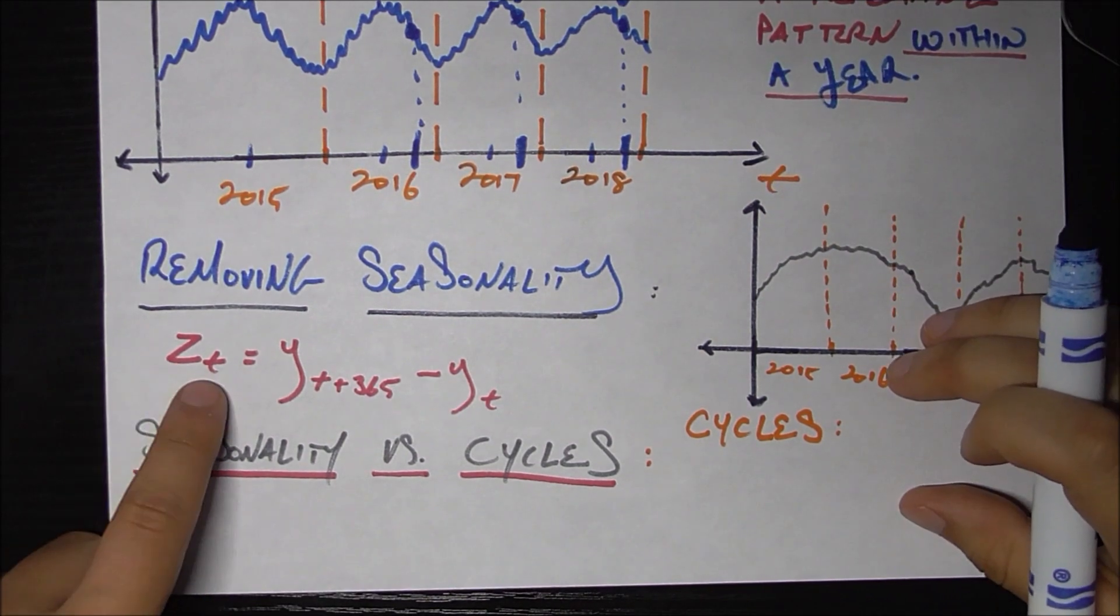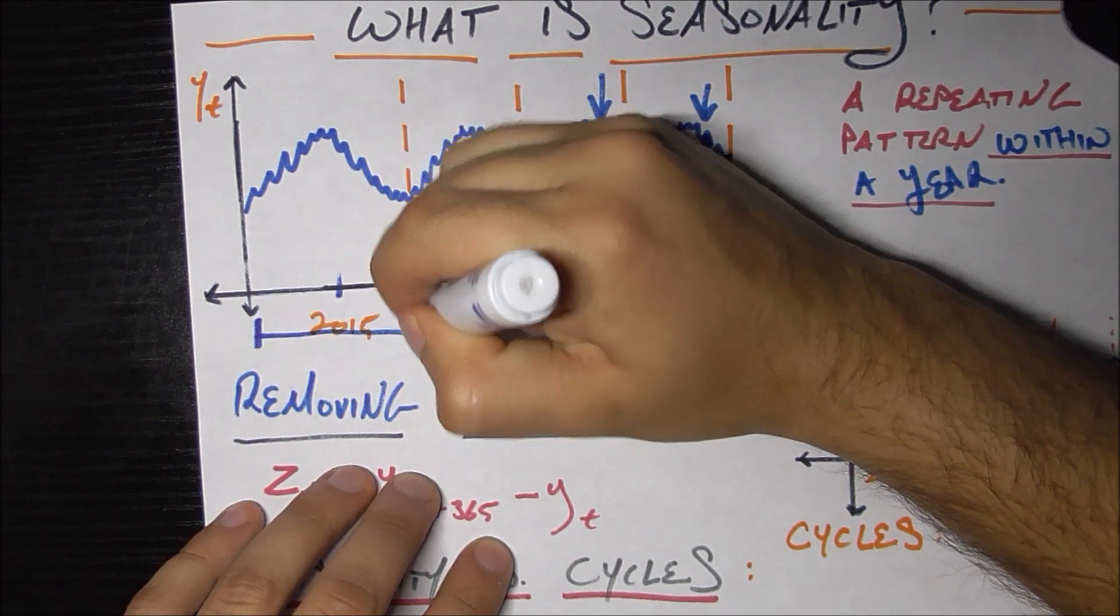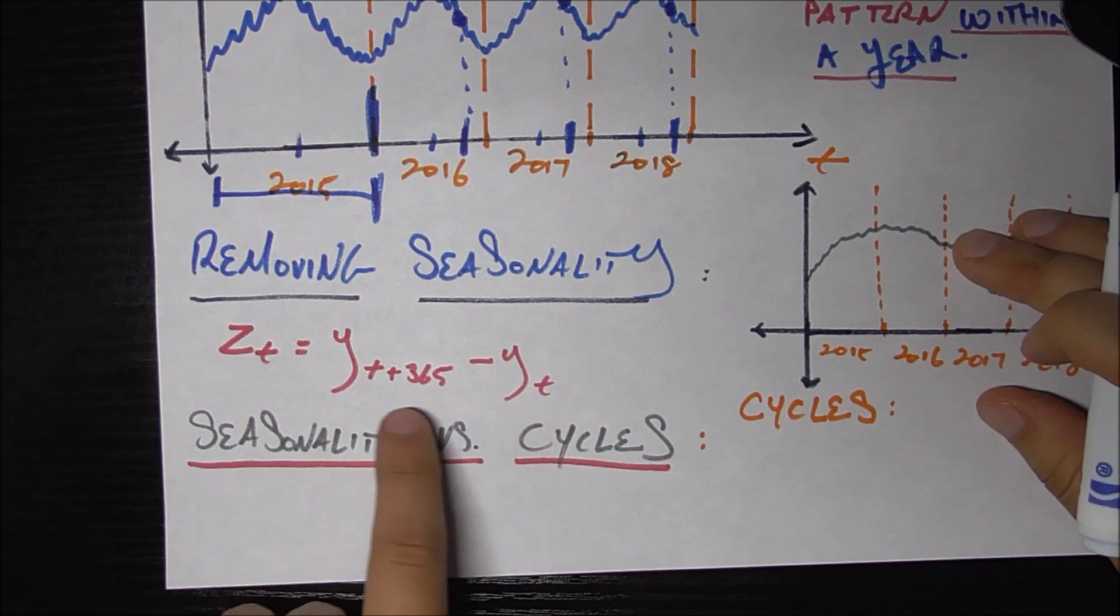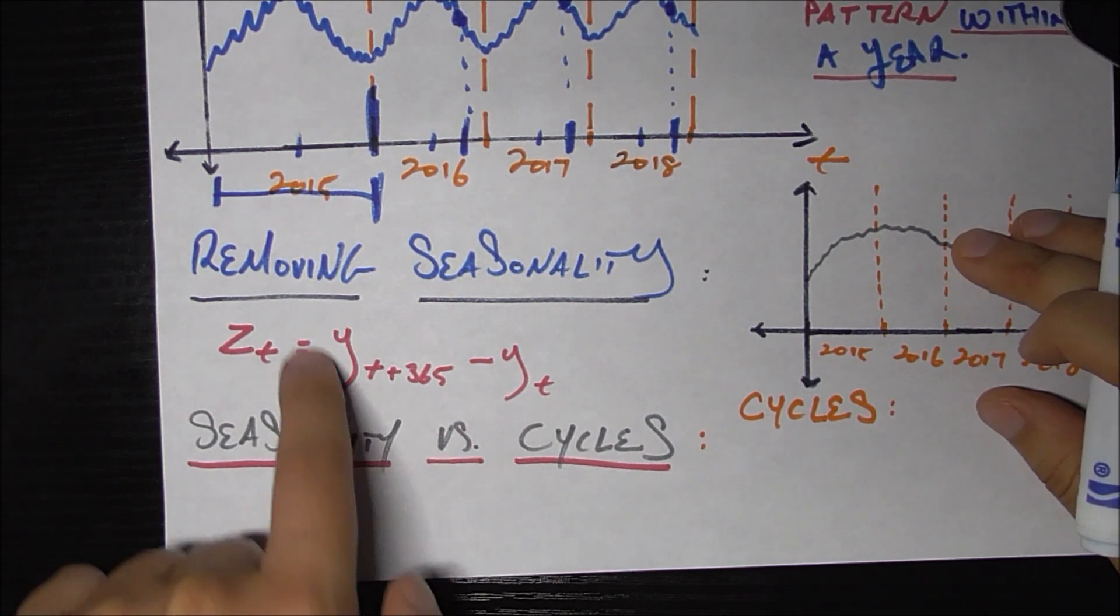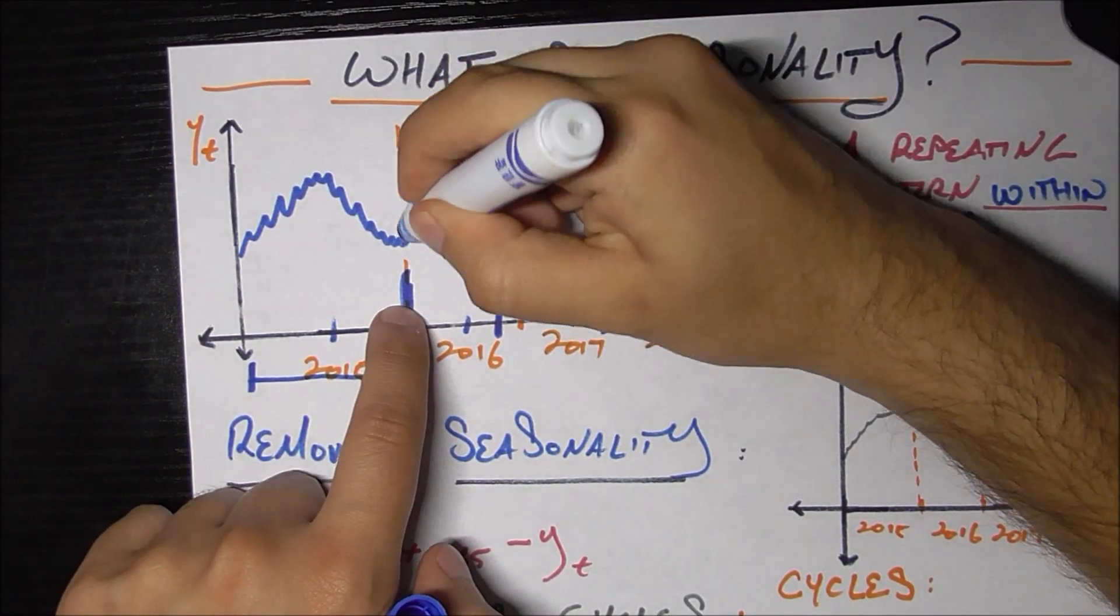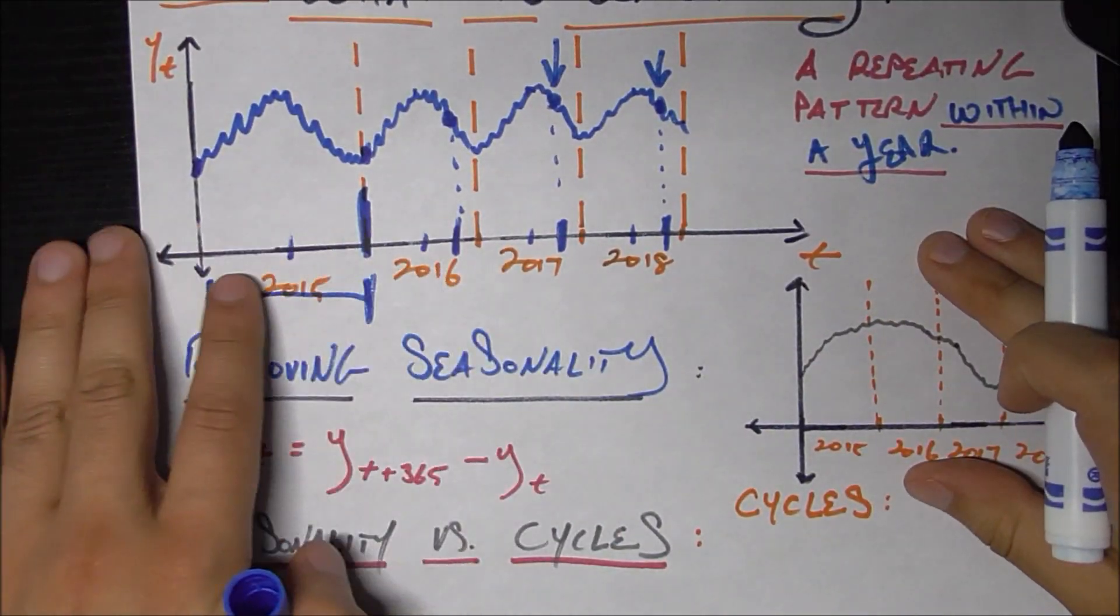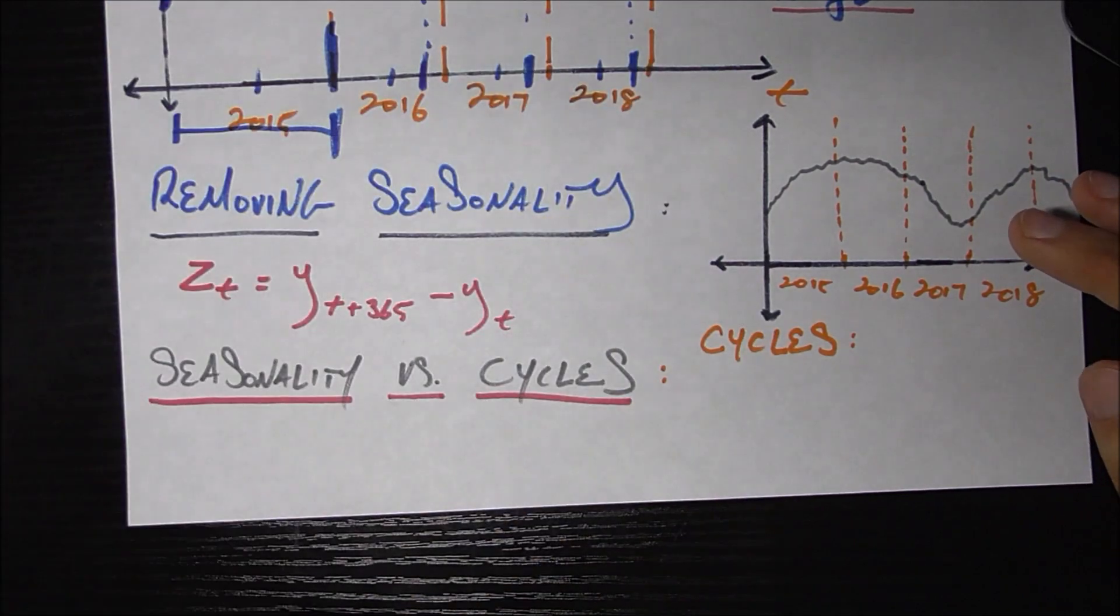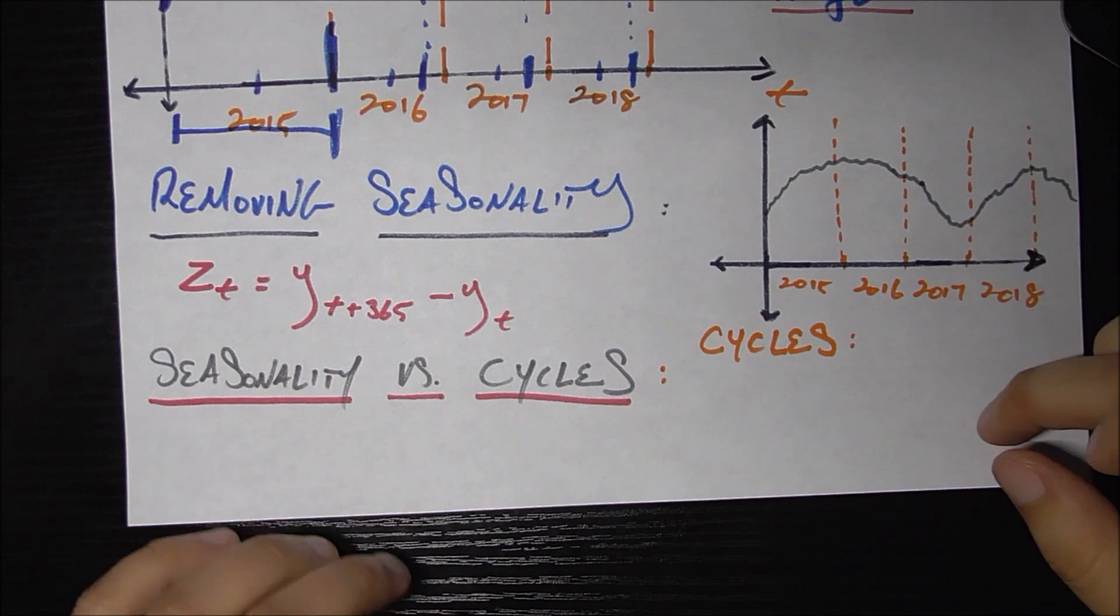And of course, the thing about Z sub T is that we don't have any data for this whole first year because for this equation to make sense, we need T to be at least zero, which means that Y needs to at least start at Y 365. So our first Z timestamp will be the first of 2016 minus the first of 2015. So we do lose out on this whole year right here. So that's one way to remove seasonality from a time series. And then you can go ahead and check if it's stationary and use your ARMA models on it.